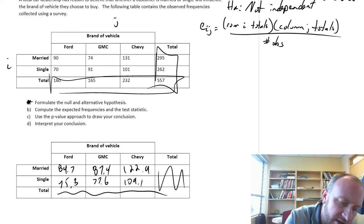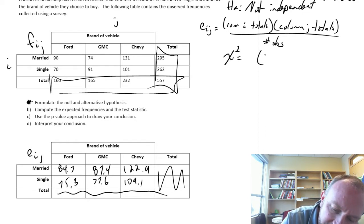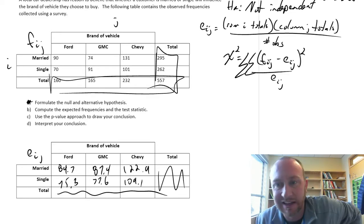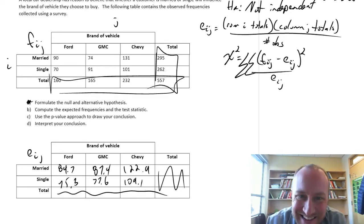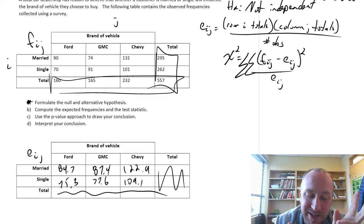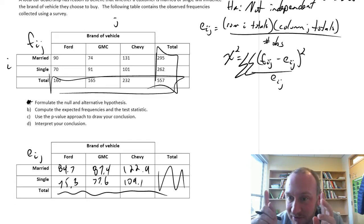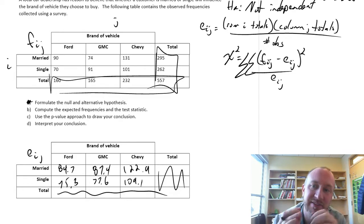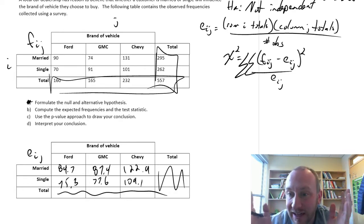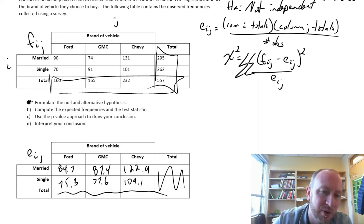So there we have all of our observed values, our expected values. Now we can calculate this test statistic, which again, by now, if you've been watching other videos in this module, you're an expert at calculating this test statistic. So we need to calculate the difference between individual observed values, expected values, divided by that expected value, and then we add all of these up. So I'll do the first couple and then I'll skip through the rest.